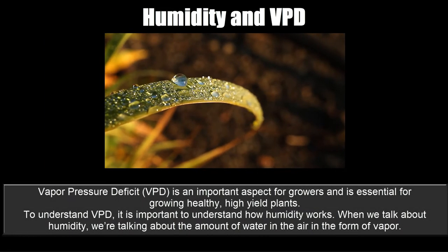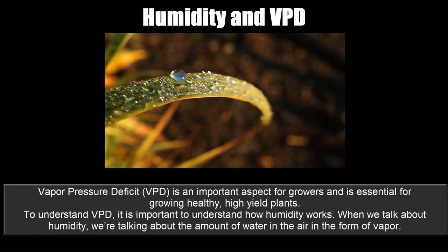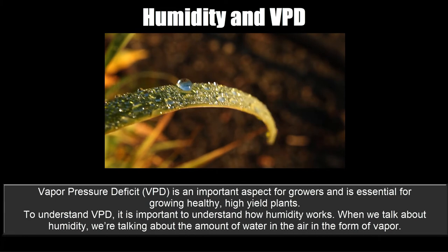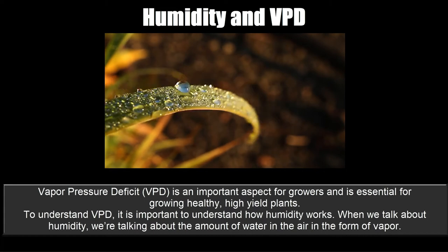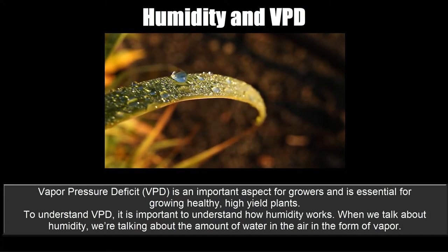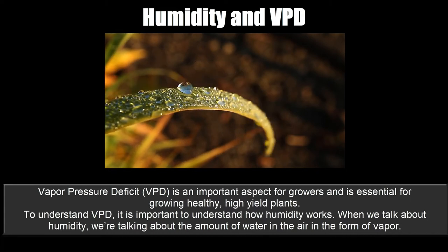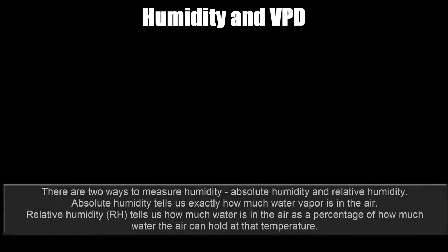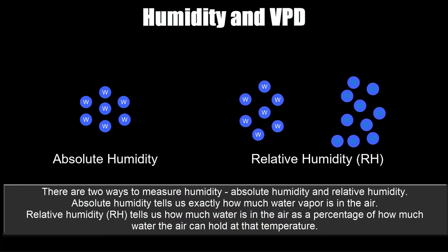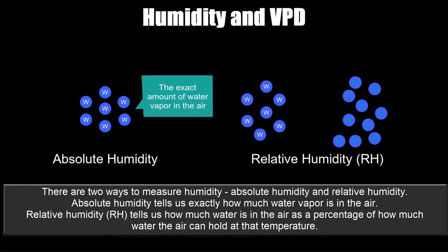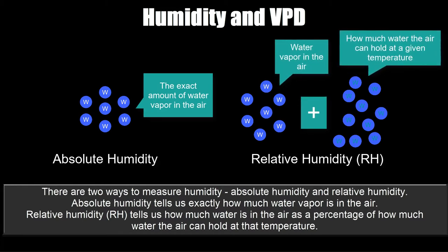Vapor pressure deficit or VPD is an important aspect for growers and is essential for growing healthy high-yield plants. To understand VPD it's important to understand how humidity works. When we talk about humidity we're talking about the amount of water in the air in the form of vapor. There are two ways to measure humidity: absolute humidity and relative humidity. Absolute humidity tells us exactly how much water vapor is in the air, while relative humidity or RH tells us how much water is in the air as a percentage of how much water the air can hold at that temperature.